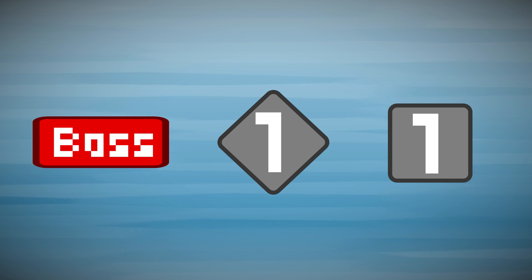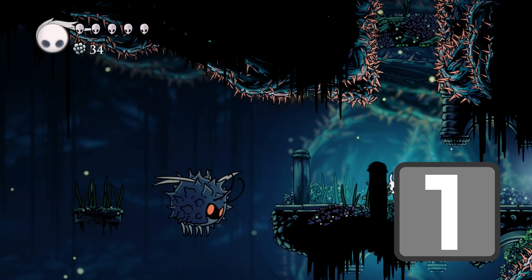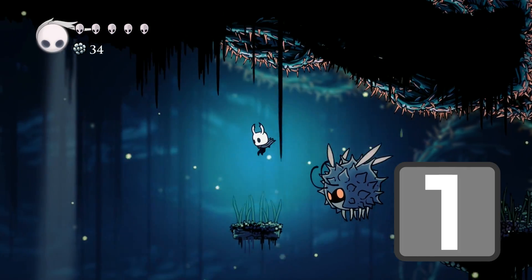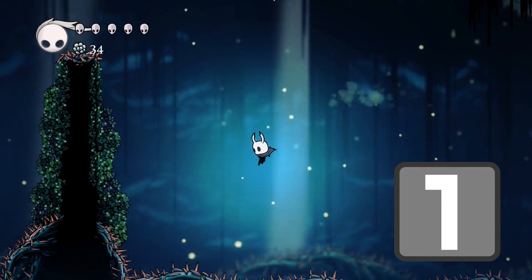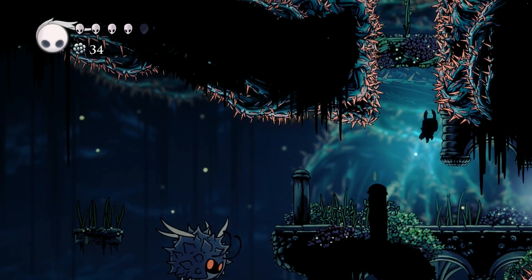Abilities and objectives are organized into locks, represented by squares, and keys represented by diamonds. A square lock is some obstacle that you cannot get past without the required key. So for instance, there could be a platforming section that you can't do without the required ability. Once you get that ability, you can now proceed.